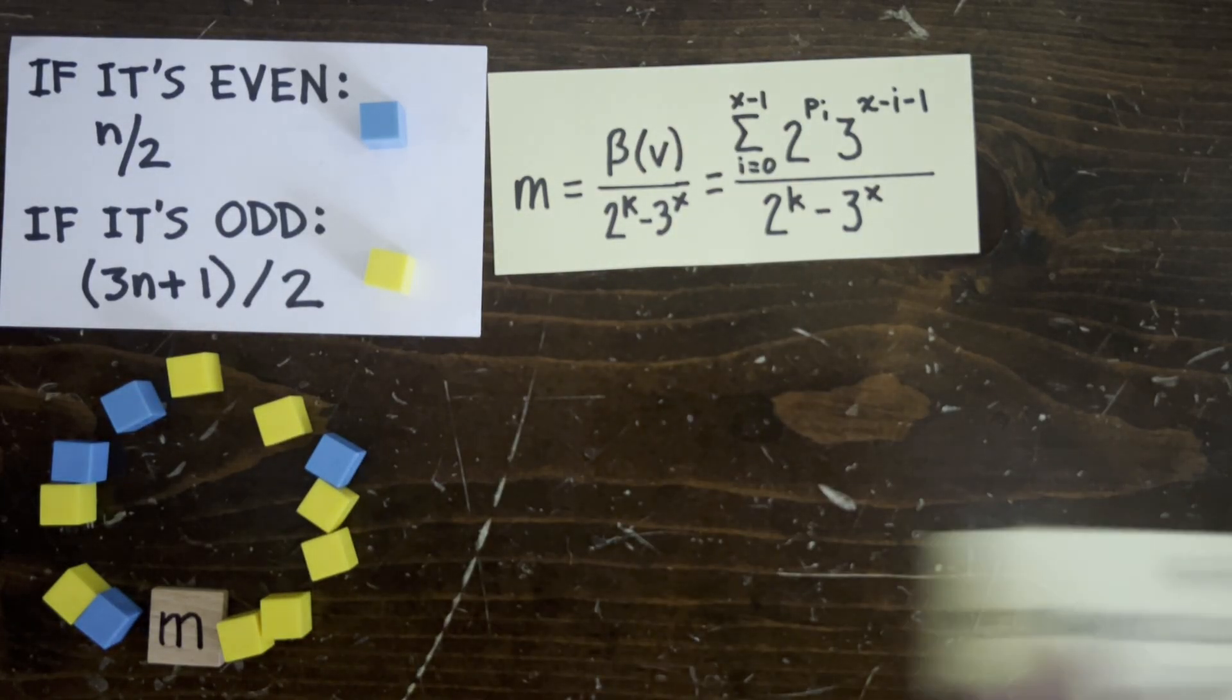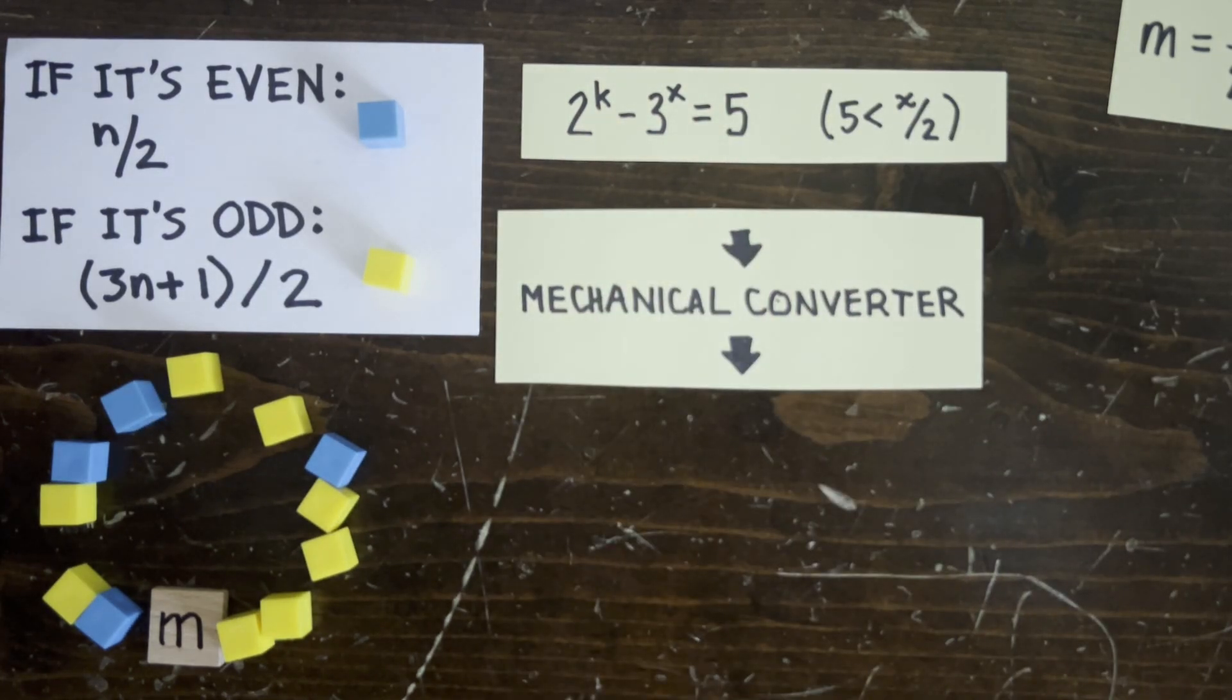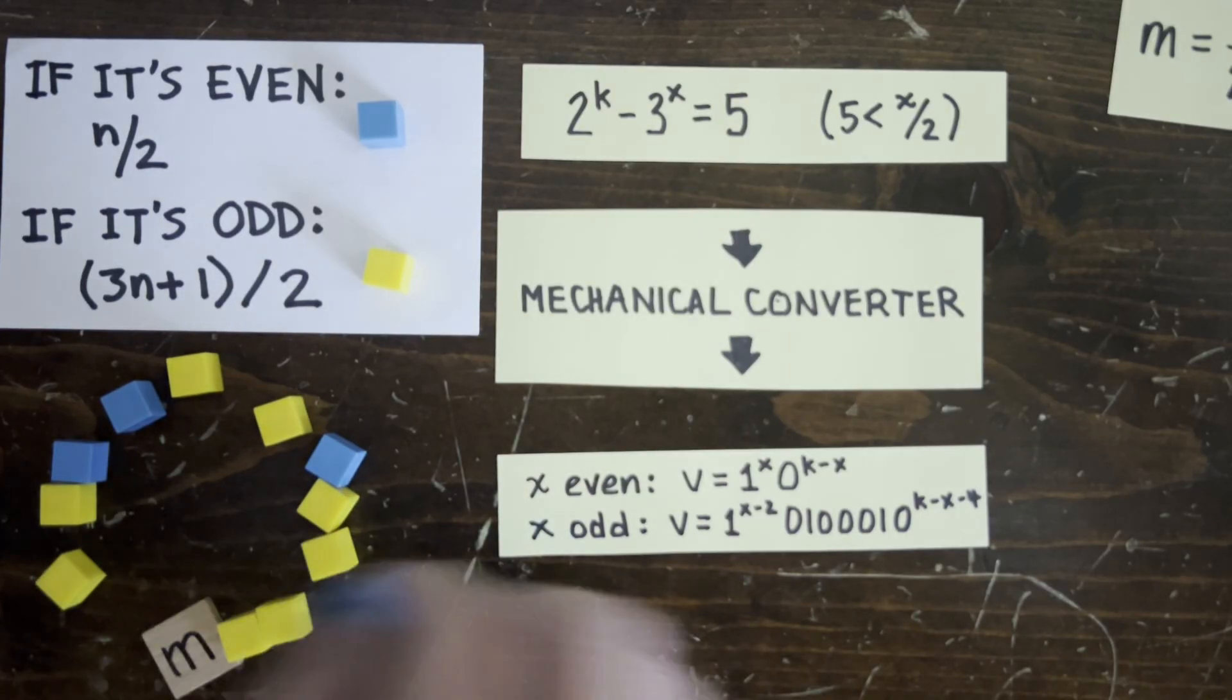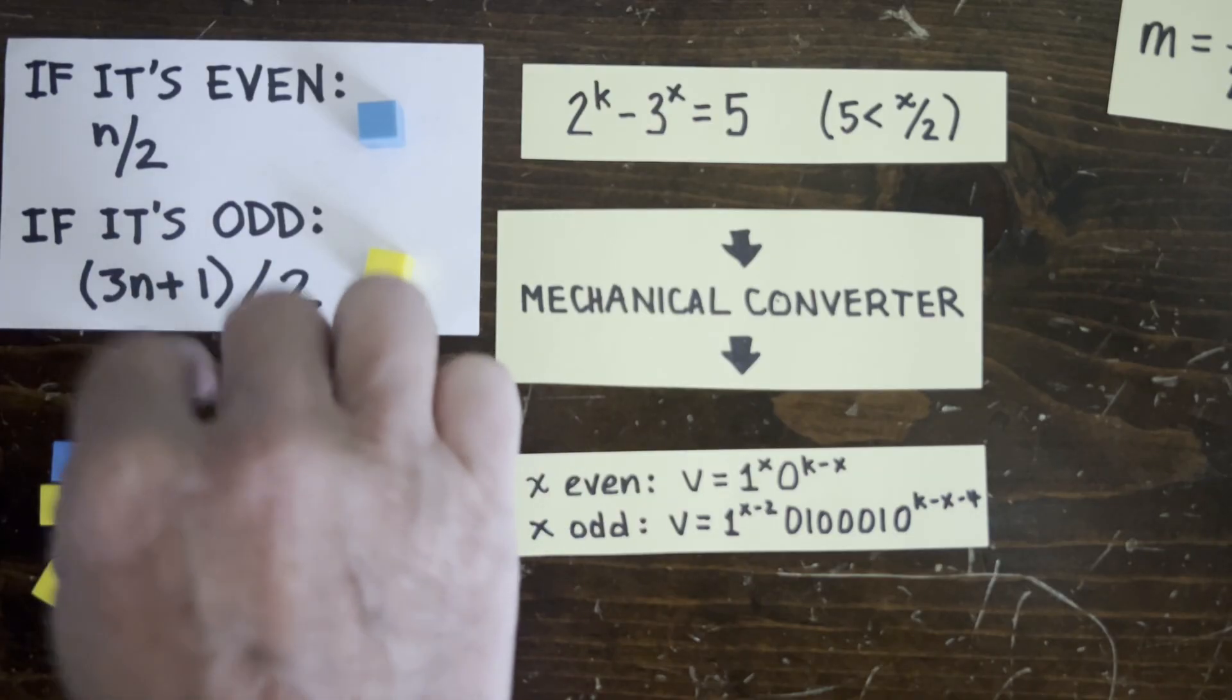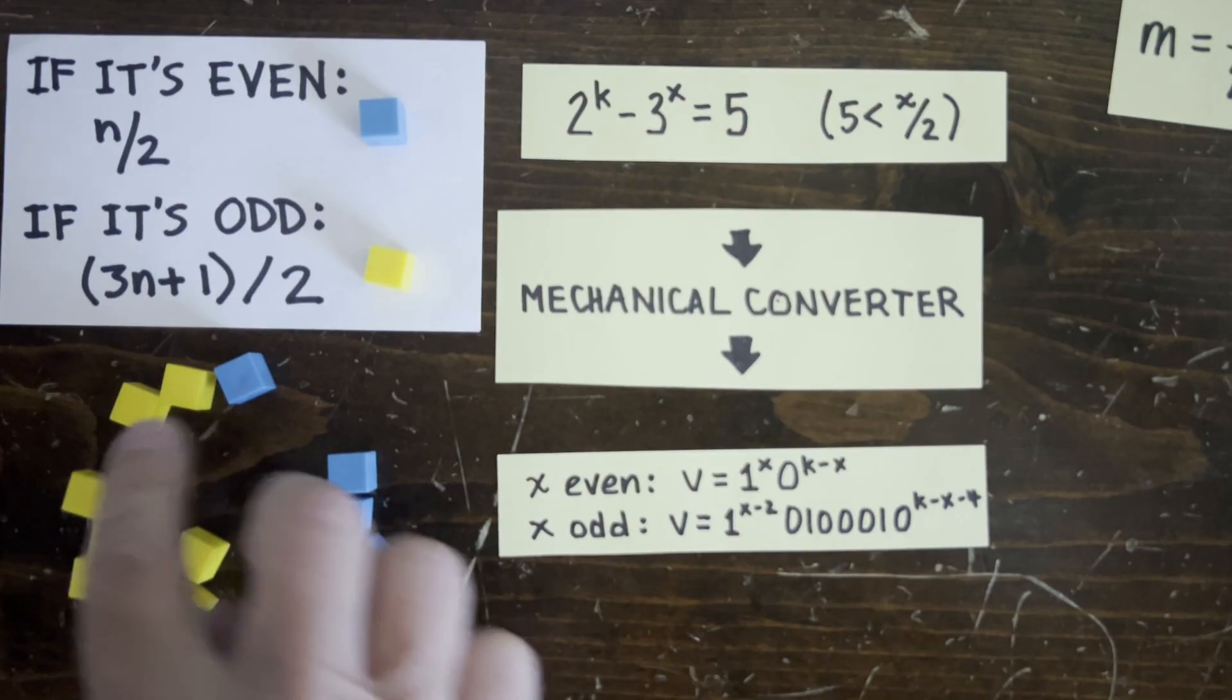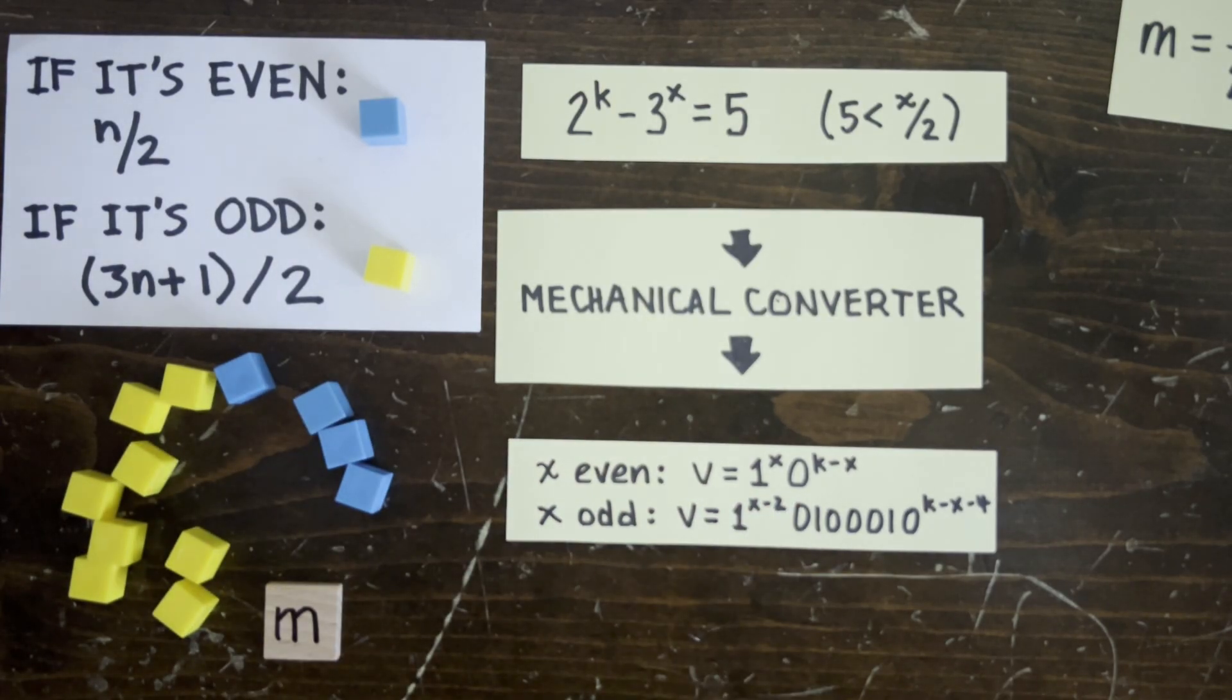Okay, back to Tao's conversion procedure. Say we receive a claim like 2 to the k minus 3 to the x equals 5. We mechanically create a Collatz loop shape v like this. If x is even, then v is a bunch of ones followed by a bunch of zeros, and if x is odd, v is this. And we can verify in all cases that beta v is a multiple of 5, so m is an integer, and we have a Collatz counterexample loop.